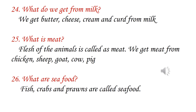What is meat? Flesh of animals is called meat. We get meat from chicken, sheep, goat, cow and pig. What are seafood? Fish, crabs and prawns are called seafood.